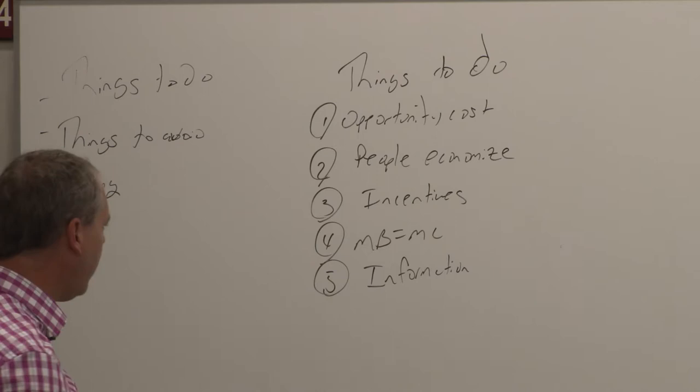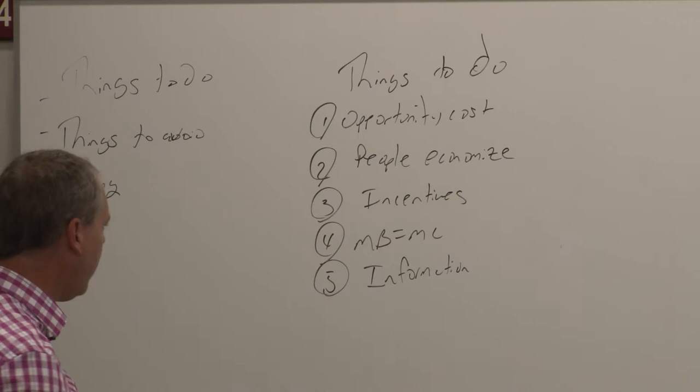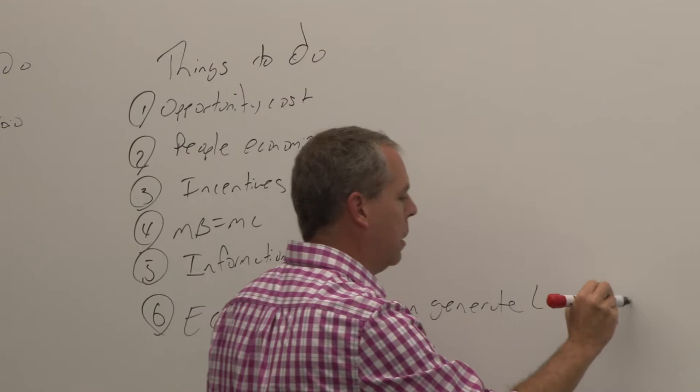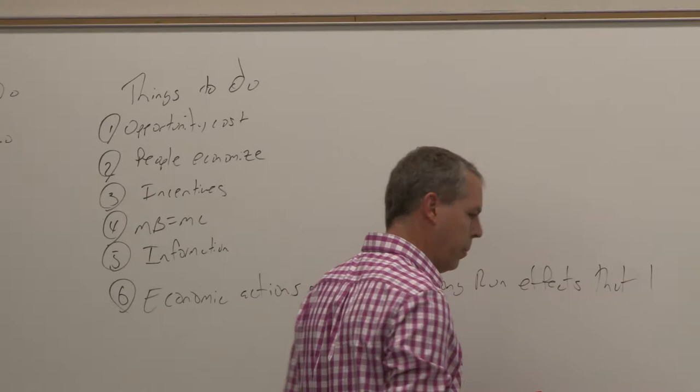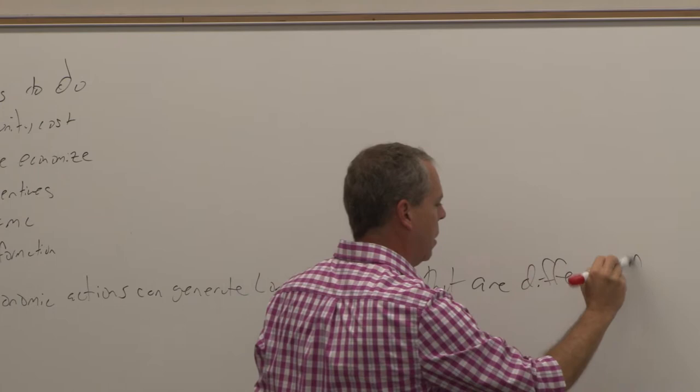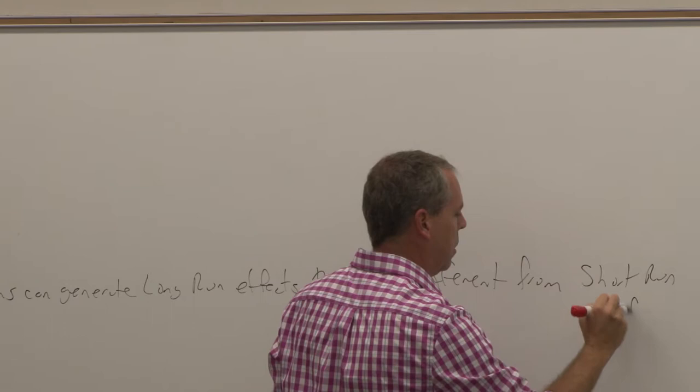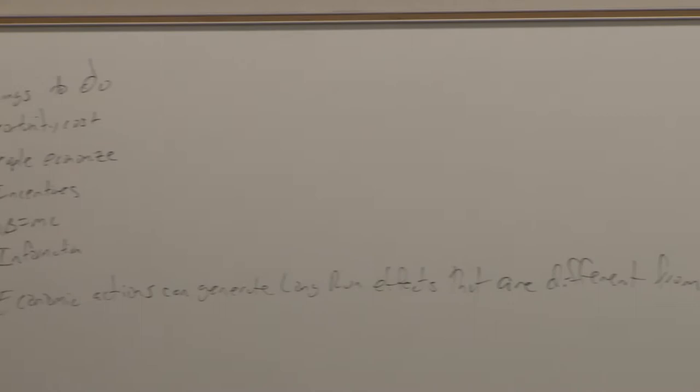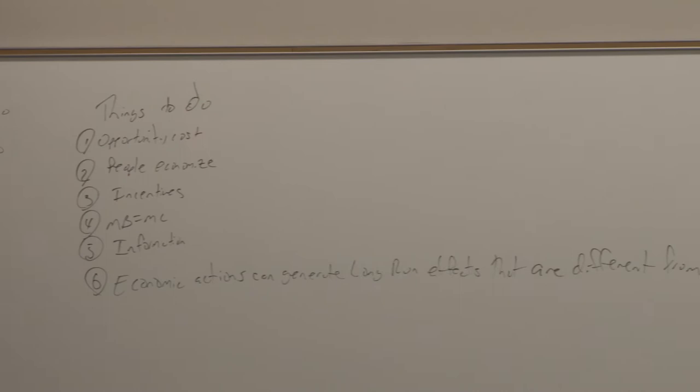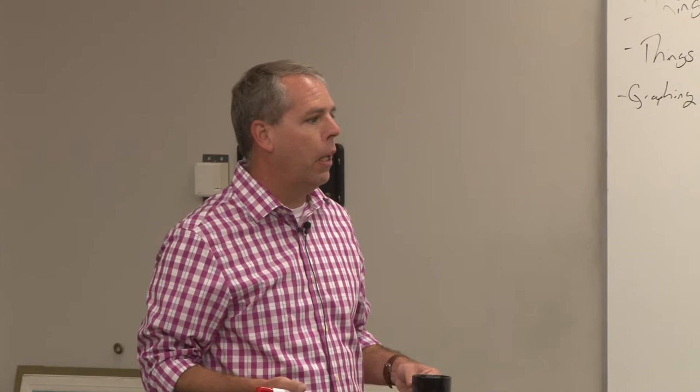And so what we want to look at today is basically number six and number seven. So number six here. Economic actions can generate long-run effects that are vastly different from the short-run effects. So in other words, when we're engaging and we're doing stuff, when we pass policies, we can get results in the long-run that are a whole lot different than what we actually intended in the short-run and actually can be more detrimental in one way than what we had originally started. So let's look at a couple of different examples.